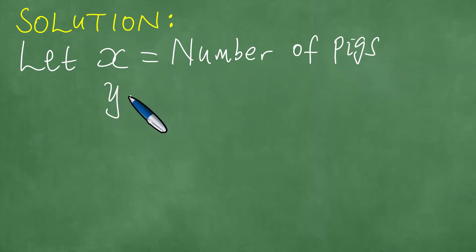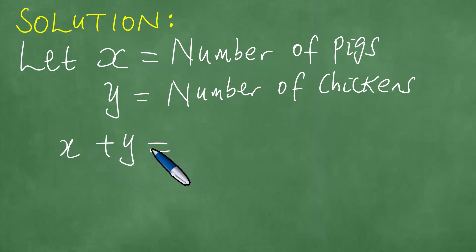Y equals the number of chickens. So that in the end, then we have X plus Y equals 40, because there are 40 pigs and chickens in the farmyard.